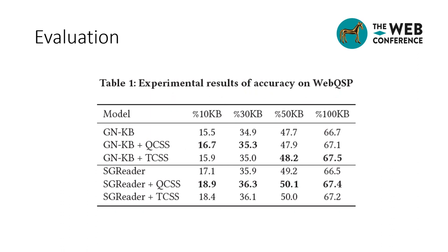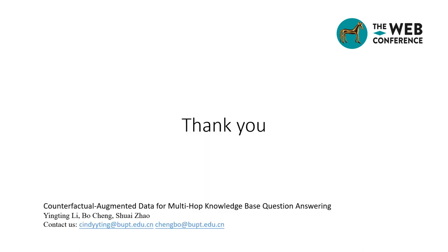We follow the experimental setting of GraphNet. That is, the KB triples are down-sampled to varying degrees including 10%, 13%, 50%, and 100% of the original data. We use accuracy as the evaluation metric, which represents the accuracy of the top predicted answer from the model. Through experiments, we found that both QCSS and TCSS have improved the original performance of the model.